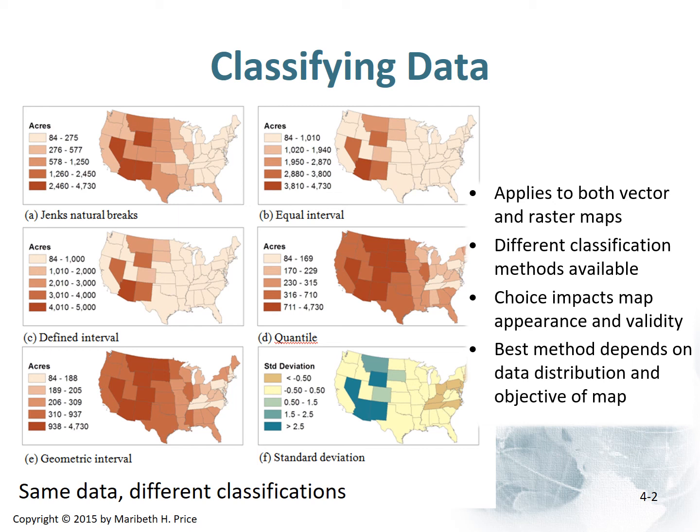When we classify data, we have pretty much these six standard options: Jenks natural breaks, defined interval, geometric interval, equal interval, quantile, and standard deviations. These techniques apply to both vector and raster maps, and you can have different classification methods available. The choice impacts the map appearance and the validity of your map. The best method depends upon the distribution of your data and the objective of your map. This is something you're almost always tested on — which ones you should use and not use.